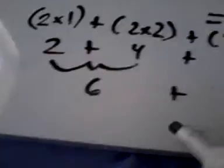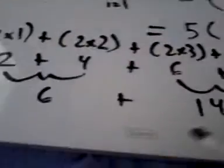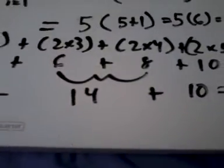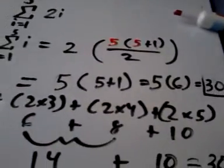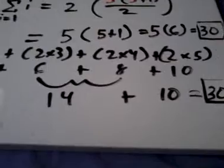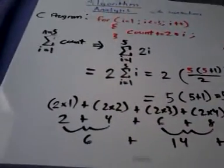So now we have 6 plus 14 plus 10, that equals 30. And there's the proof. I hope you guys learned something.